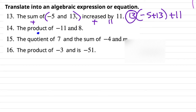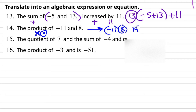Number 14: "the product" means multiply. The product of negative 11 and 8 — I'll put negative 11 in parentheses times 8. If you put numbers in parentheses right next to each other, that's implied multiplication. So the answer to number 14 is (negative 11)(8).